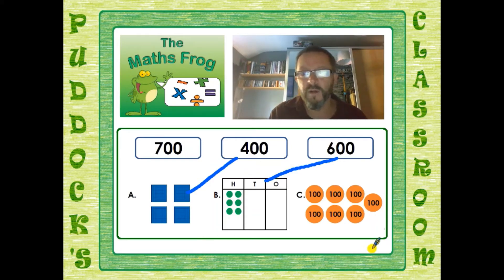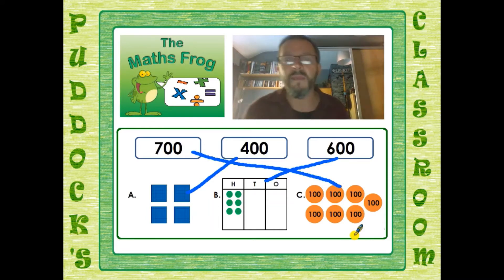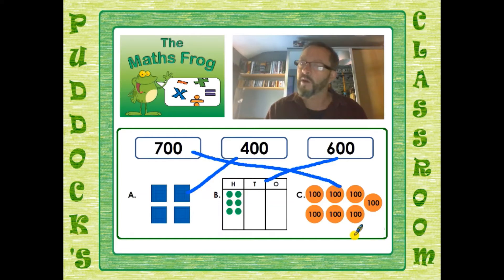The final one we have 100 counters. Let's have a look at the 100 counters and count them: 100, 200, 300, 400, 500, 600, 700. And there's our 700 way over there, so I can join this number with our picture of 700. Nice easy question. Again you will be able to do that because you have seen all those materials in school this week. I just hope that you can remember how to do that. Good luck with that one.